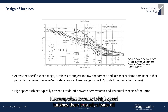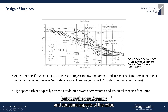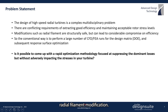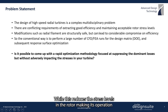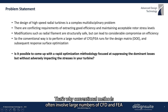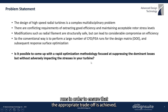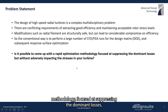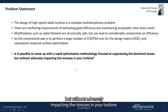When it comes to high speed turbines, there is usually a trade-off between the aerodynamic and structural aspects of the rotor, and this brings us to our problem statement. In the case of high speed radial turbines, it's common practice to use radial filament modification. While this reduces the stress levels in the rotor making its operation safer, it takes a heavy toll on efficiency. That's why conventional methods often involve large numbers of CFD and FEA runs to ensure the appropriate trade-off is achieved, consuming a lot of computational time and resources. The question is whether it's possible to come up with a rapid optimization methodology focused on suppressing the dominant losses without adversely impacting the stresses in your turbine, and this is what we aim to explore through this project.